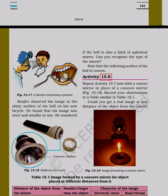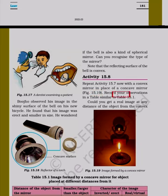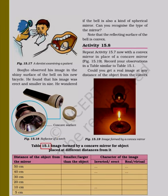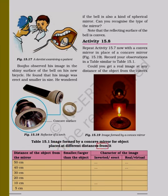Bujho observed his image in the shiny surface of the bell on his new bicycle. He found that his image was erect and smaller in size. If the bell is also a kind of spherical mirror, can you recognize the type? Note that the reflecting surface of the bell is convex. Activity 15.8: Repeat activity 15.7 now with a convex mirror in place of a concave mirror. Record your observations in a table similar to table 15.1. Could you get a real image at any distance of the object from the convex mirror?